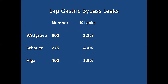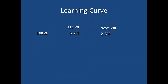If one looks at the early presentations of laparoscopic gastric bypass by those who championed the field back in 1994 — Alan Whitgrove, Phil Schauer, Calvin Higa — and looks at their initial published studies, the leak rate varied between two and four percent. When looking at learning curves, when surgeons had their first 70 cases, the leak rates were much higher than in the next several hundred.